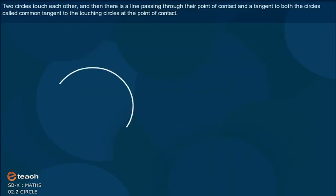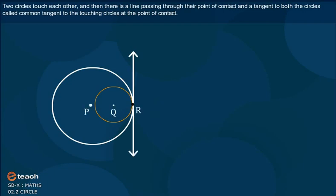Two circles touch each other and then there is a line passing through their point of contact and a tangent to both the circles, called common tangent to the touching circles at the point of contact.